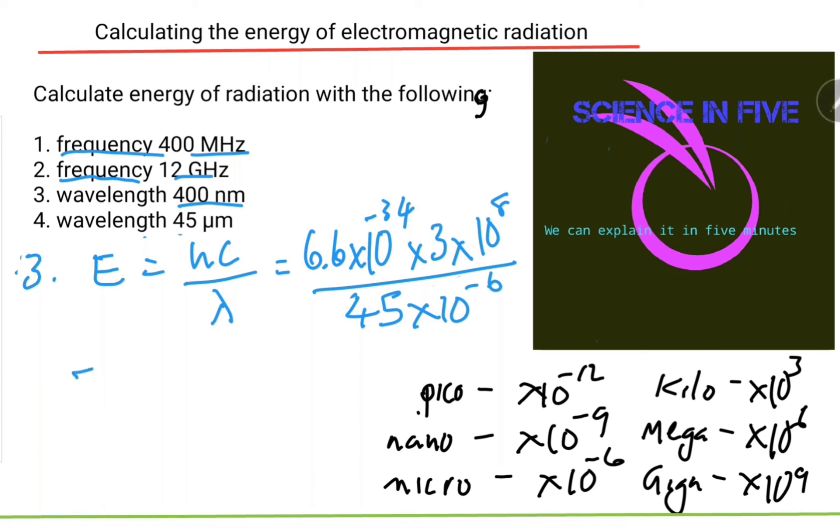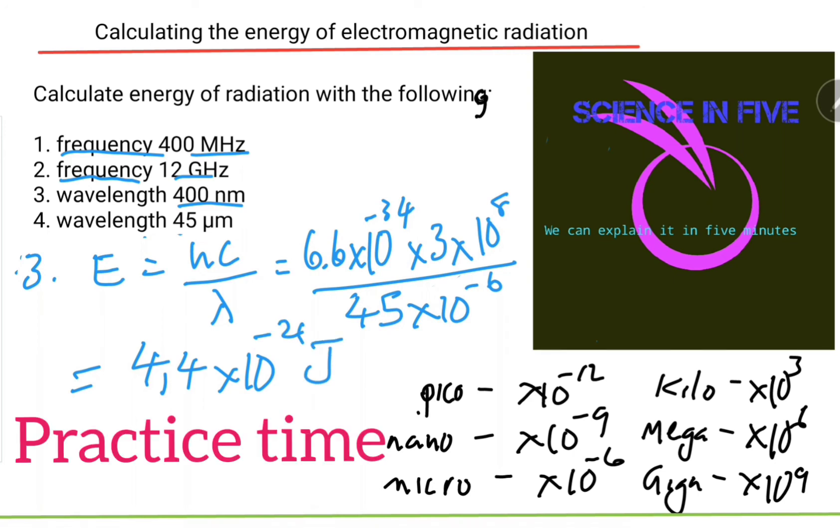Generally, as a rule, you always get very small values when you're calculating the energy of electromagnetic radiation. So there you go.